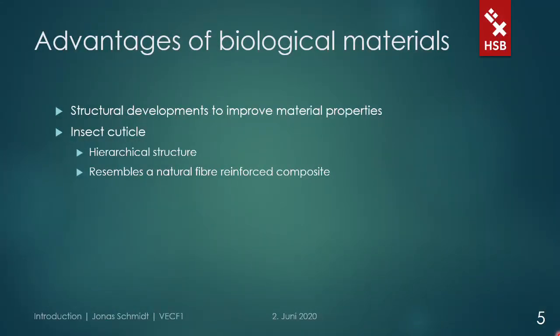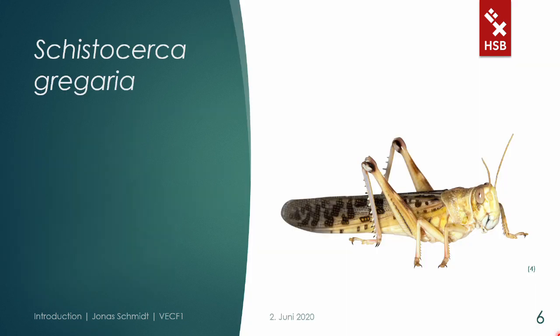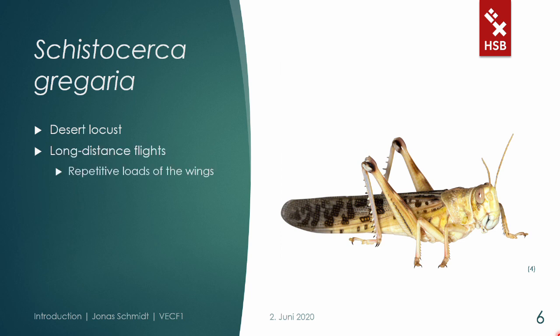Due to this structure, the material properties and especially the fracture toughness are surprisingly high when taking its weight into account. This makes it an excellent material for flying insects like the desert locust, which was the animal model of the study. These locusts can travel incredible distances in search of food, where the wings are loaded in a high-frequency and repetitive manner. As we found out that they can't heal damage to the wings and a crack throughout the wing would lead to lower survivability, they need mechanisms to cope with these types of damages.